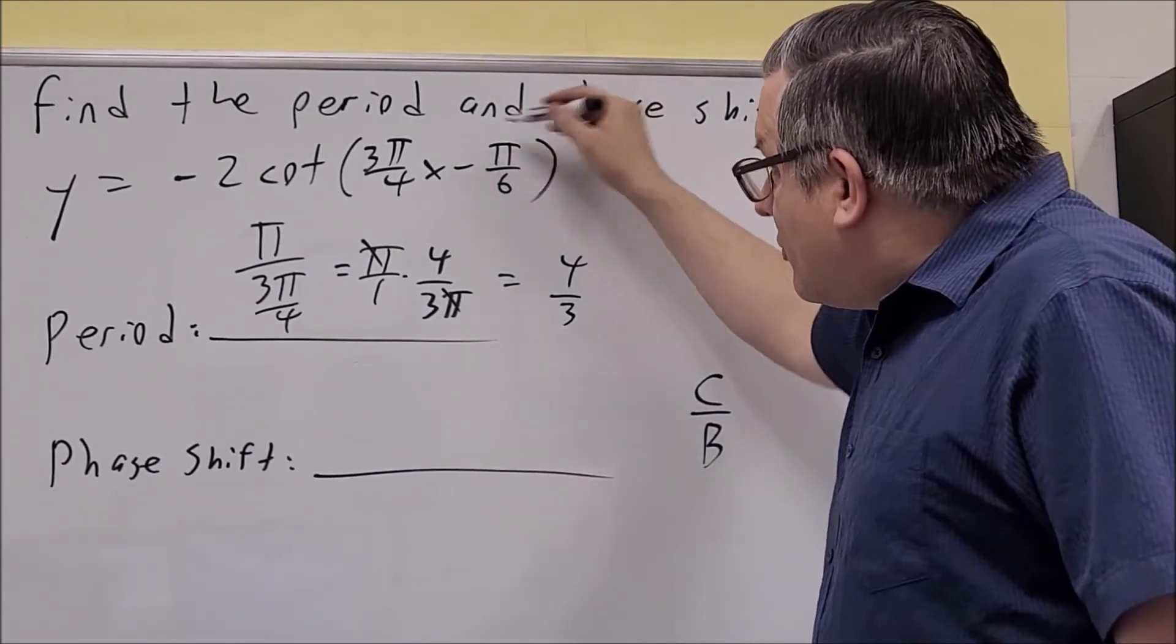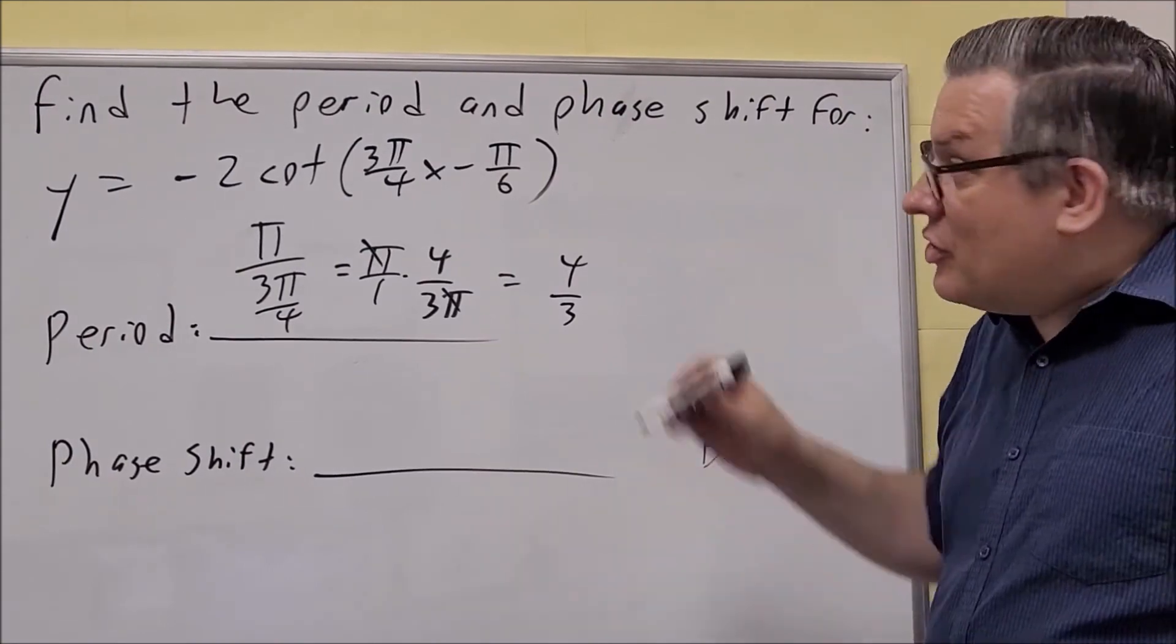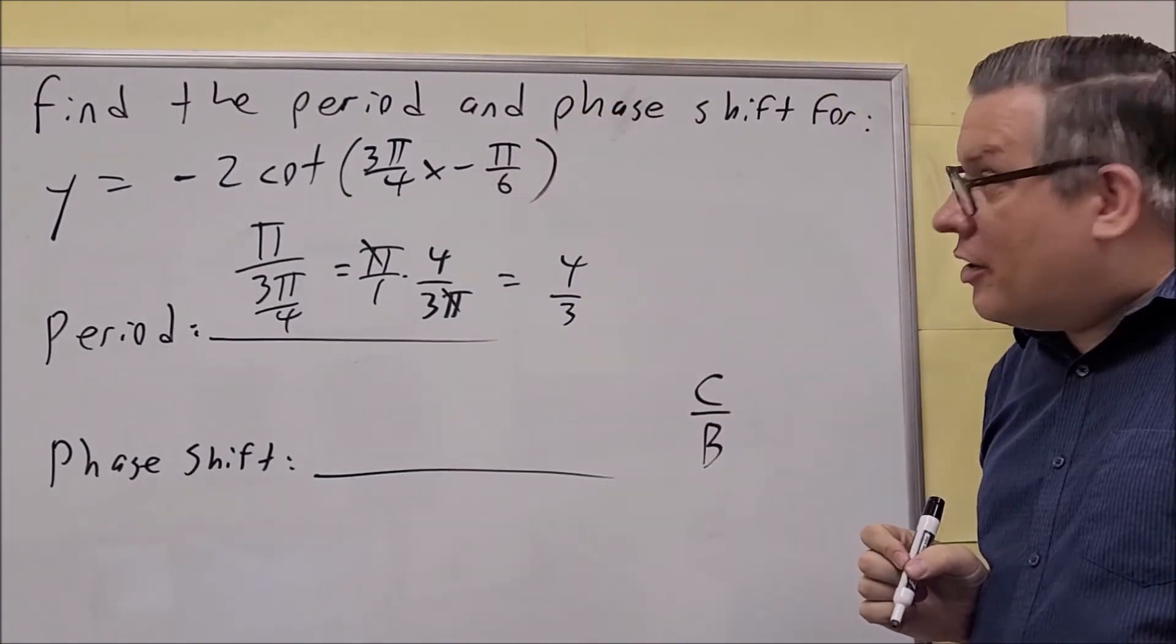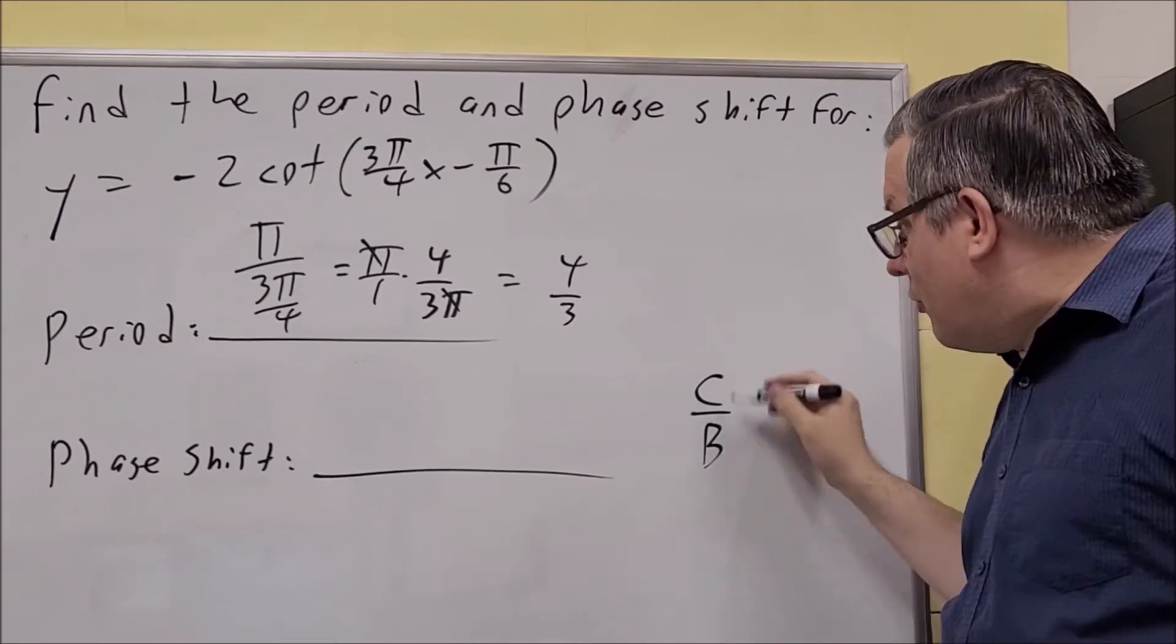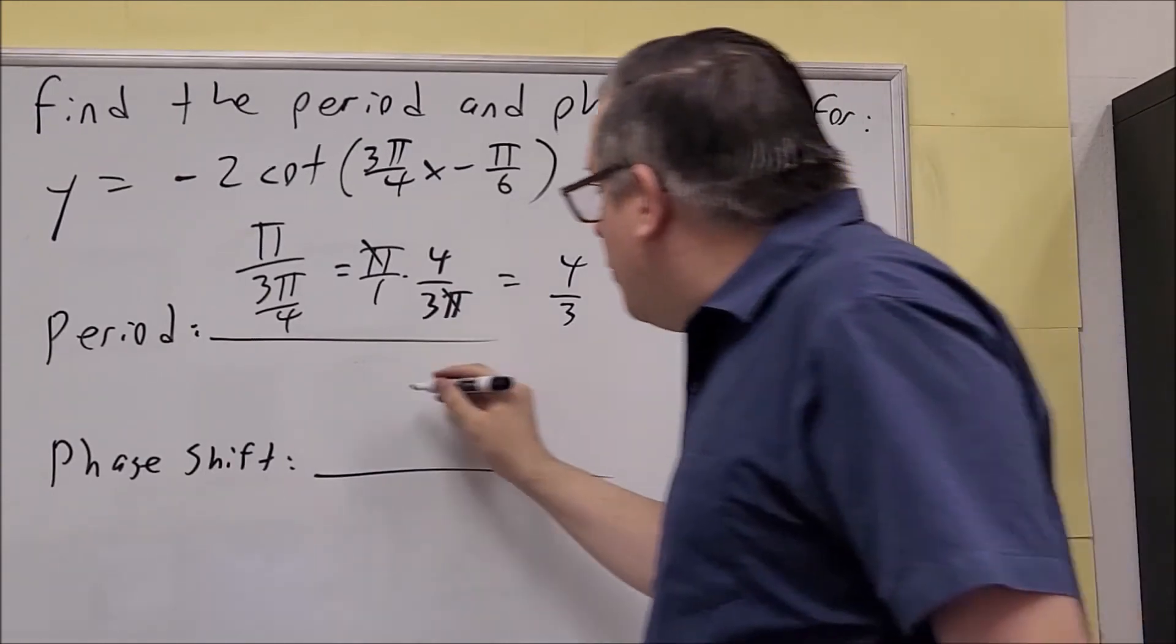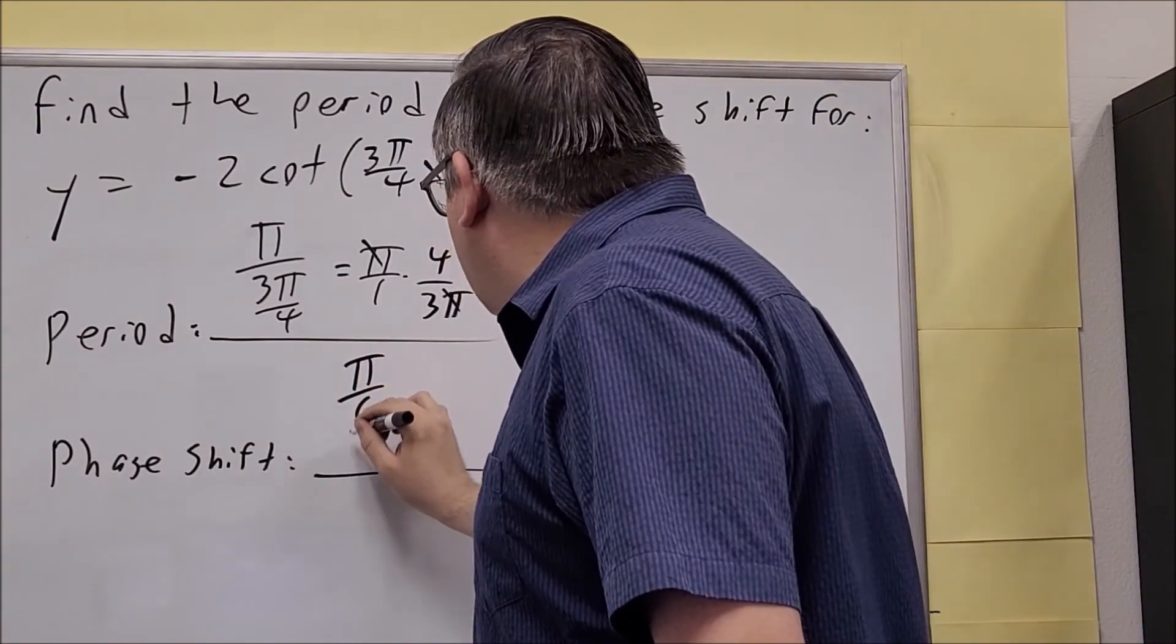Now it's minus, so it means your c is going to be positive. It's always going to be the opposite sign of what we see in here as kind of a shortcut way of doing it. The formula is c over b, so we're going to do π over 6. That's the c that goes on top.